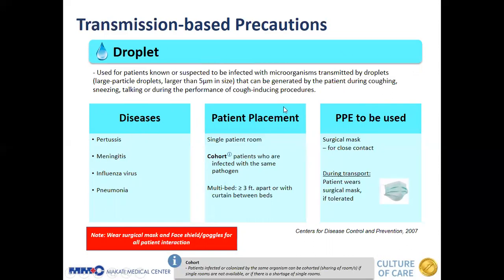For patient placement, patients on droplet precaution are placed in a single patient room. If there is a surge of patients, we can cohort patients infected with the same pathogen, provided there is at least three feet of space or a curtain between beds. For PPE, surgical masks are used for close contact. During transport, the patient wears a mask if tolerated. Due to COVID-19, everyone with patient interaction should wear surgical masks and face shield or goggles at all times.